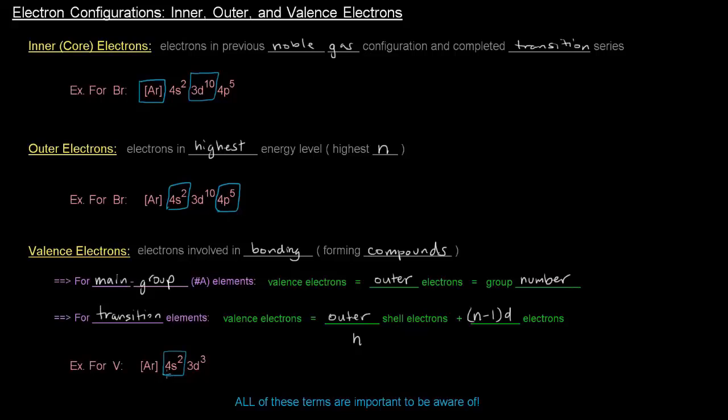So if the n is 4, which is what's going on here, that's the highest energy level, n minus 1 would be 3. And so those d electrons, those n minus 1 d electrons, are also valence electrons for transition elements. So in this case, there are 5 valence electrons in the case of vanadium. So it's a little bit different when it comes to transition metals.